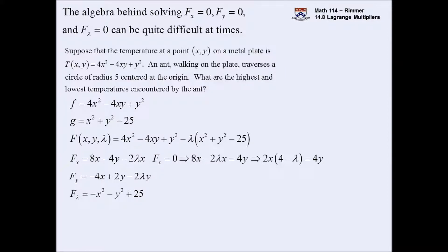Be careful with the zero product property. When we factor and get a product equal to zero, the key is that it equals zero. Don't try to say that either 2x equals 4y or (4 - λ) equals 4y - that zero property only works when things equal zero. Two things multiplied to give a nonzero result could each be anything. Don't do illegal algebra. For the y-partial, we can solve for y - there's no division by zero here.